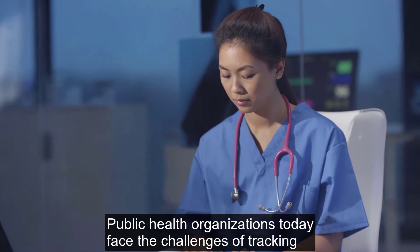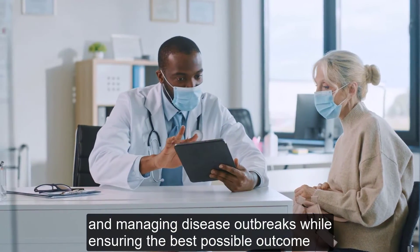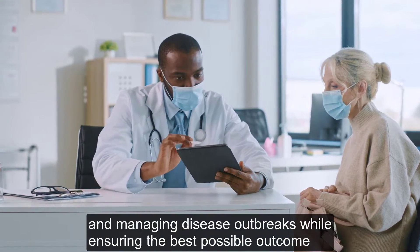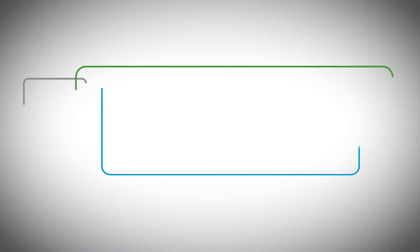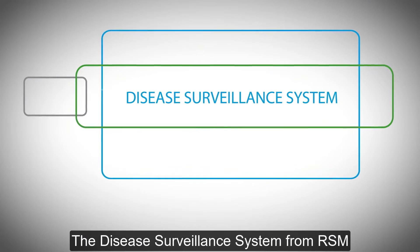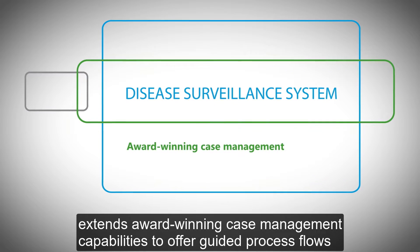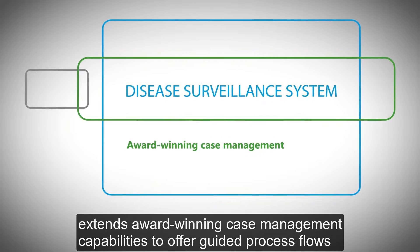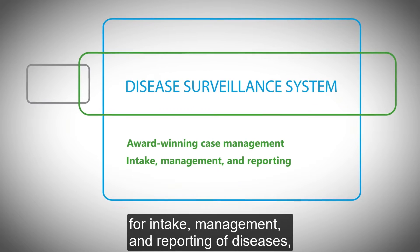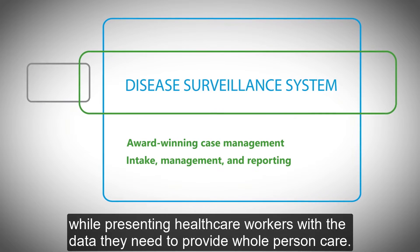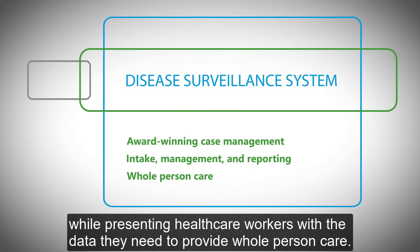Public health organizations today face the challenges of tracking and managing disease outbreaks while ensuring the best possible outcome for every individual. The Disease Surveillance System from RSM extends award-winning case management capabilities to offer guided process flows for intake, management, and reporting of diseases, while presenting healthcare workers with the data they need to provide whole-person care.